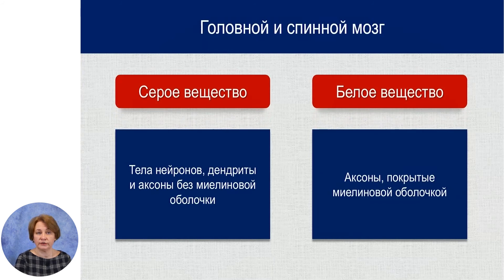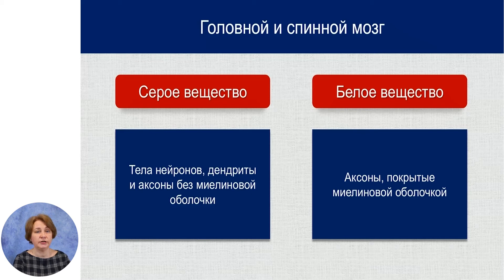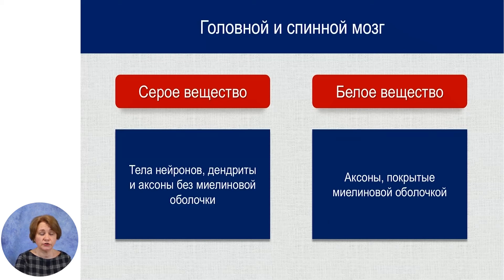Центральные органы нервной системы – это головной и спинной мозг. Они образованы белым и серым веществом. Серое вещество представляет собой тела нейронов, дендриты и аксоны, у которых нет миелиновой оболочки. А белое вещество состоит из аксонов, которые покрыты миелиновой оболочкой. Миелиновая оболочка белого цвета – поэтому и белое вещество.